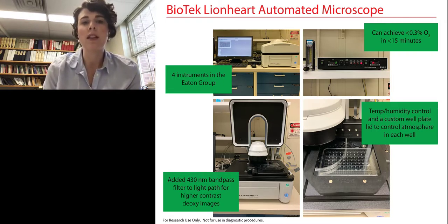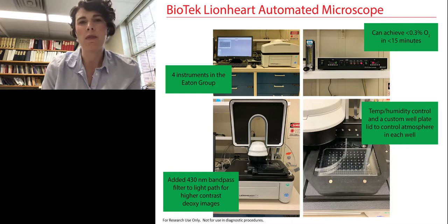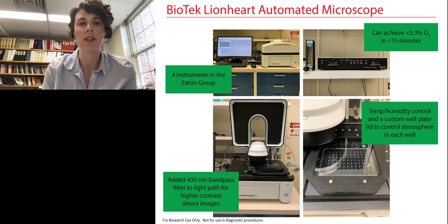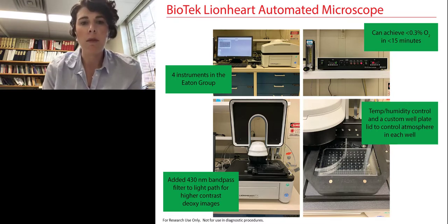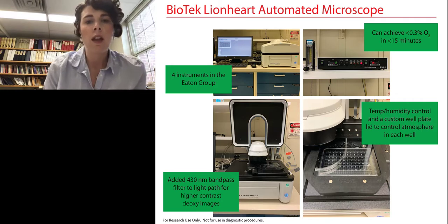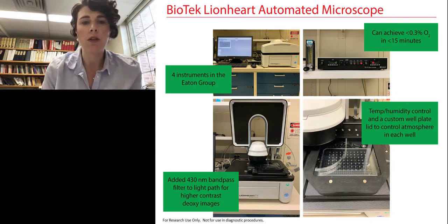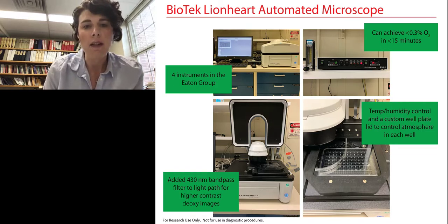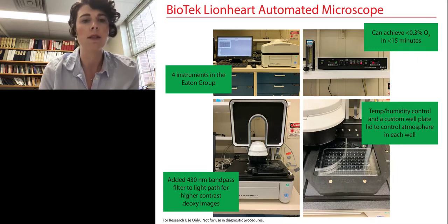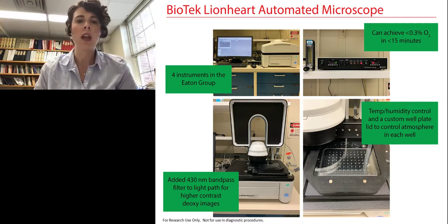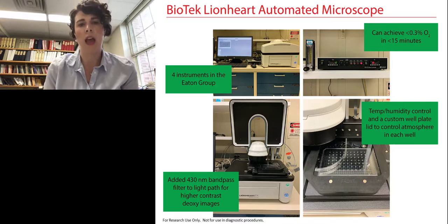In order to deoxygenate red blood cells, we flood the instrument with nitrogen, and we can achieve less than 0.3% oxygen in less than 15 minutes. We can actually get down to about 0.1% oxygen in about 10 minutes, which is really pushing the limits of this instrument. We do our experiments on a 384-well plate with temperature and humidity control at 37 degrees Celsius. There's a trough around the well plate that holds water for humidity, and we use a custom well plate lid to better control the atmosphere in each well.